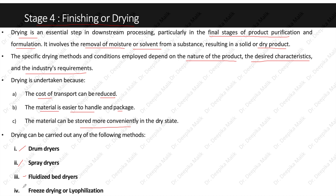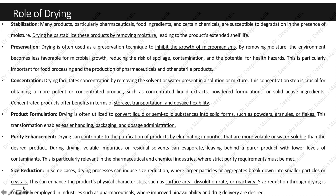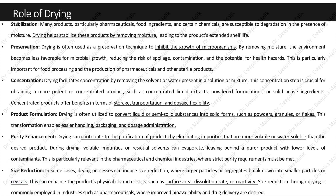Before discussing the types of drying methods, let's understand the role of drying first. Stabilization: many products, particularly pharmaceuticals, food ingredients and certain chemicals, are susceptible to degradation in the presence of moisture. Drying helps stabilize these products by removing moisture, leading to the product's extended shelf life.